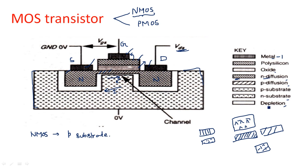The depletion layer is formed when N-type material and P-type material are placed side by side. When these two are placed together, there is recombination of electrons and holes — electrons from the N-type diffusion and holes from the P-type recombine and produce a neutral region, which is the depletion layer.